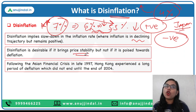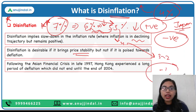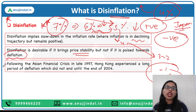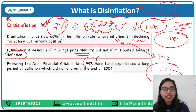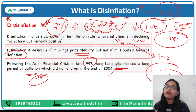If this brings price stability into the country, then this disinflation is good. But if it continues from five point five to four percent, then from four to three, two, minus one, minus two percent — in that case it will lead to deflation, and that will become worrisome. A good example is the 1997 Asian financial crisis: Hong Kong experienced a long period of deflation where inflation kept falling until they had to face the problem of deflation, and that persisted till 2004.